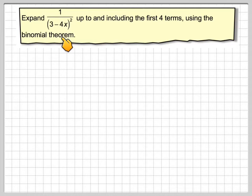Expand 1/(3-4x)² up to and including the first four terms using the binomial theorem. So we've got 1 over (3-4x) all squared. Now we'd write this as (3-4x)^(-2).